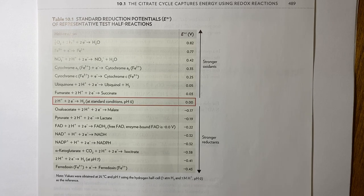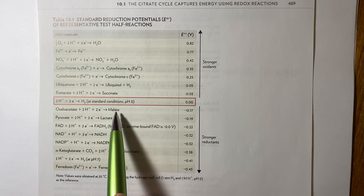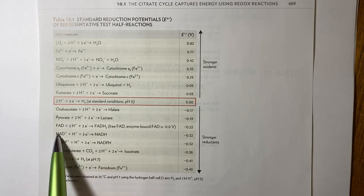So we had oxaloacetate to malate. So that's one of them. And then the other one would be NAD plus to NADH. So these are our two half reactions.